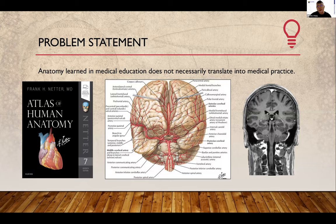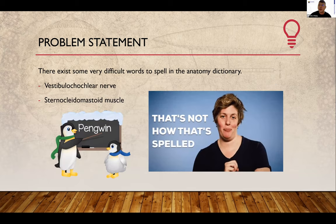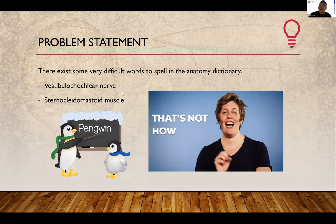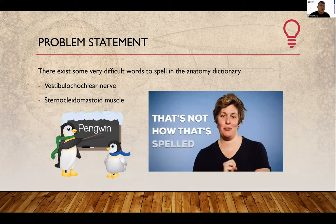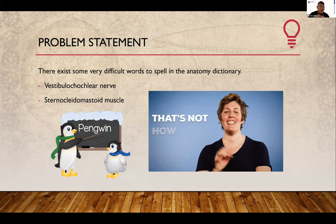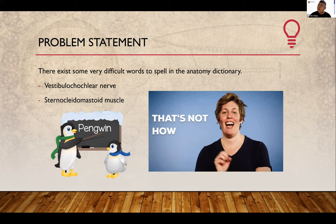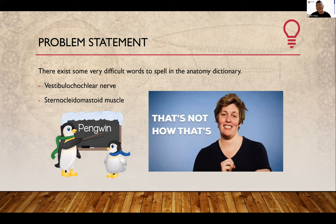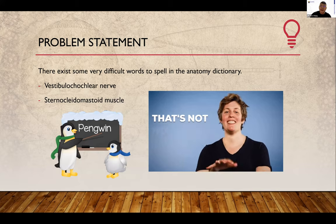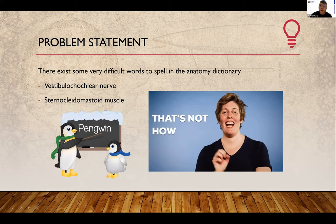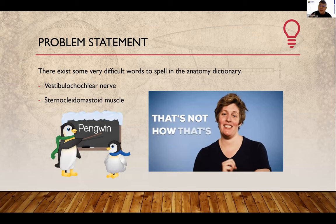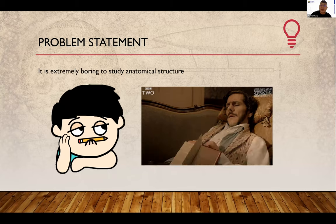The second problem is that there are some very difficult words to spell in medicine, especially in anatomy. There are long terms and a lot of times people get the spelling wrong. Traditionally, you look at the book, try to memorize the sound, but when you come to spell it, you get it wrong — just like penguins and penguins — they sound the same but you spell it wrong. In medicine, if you get it wrong, that's important. The third problem, and the one I most want to deal with, is that it is extremely boring to study anatomical structures.